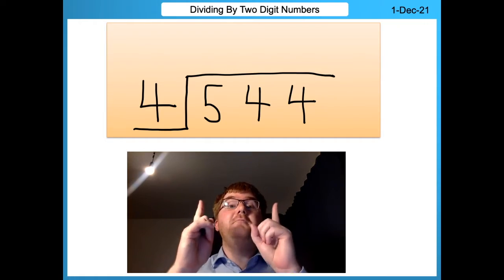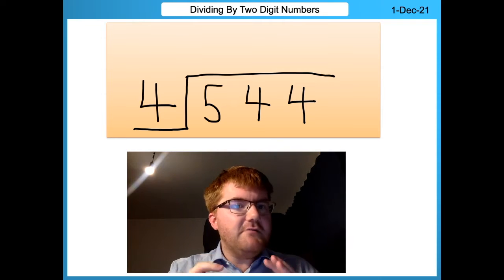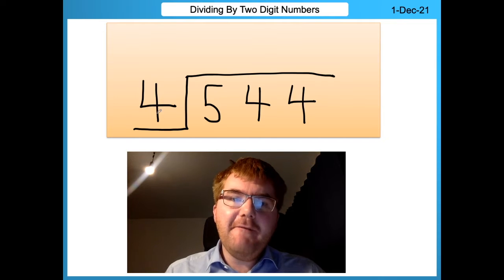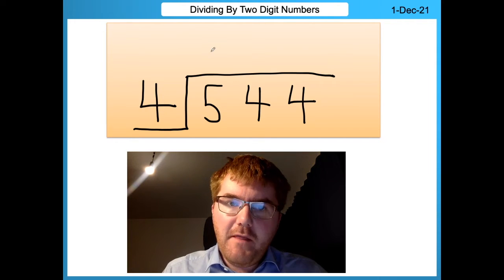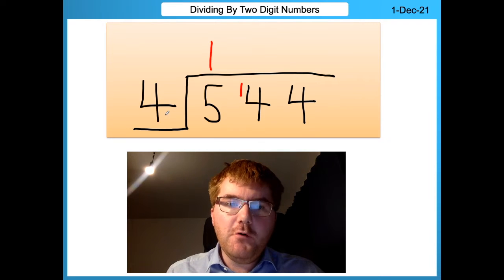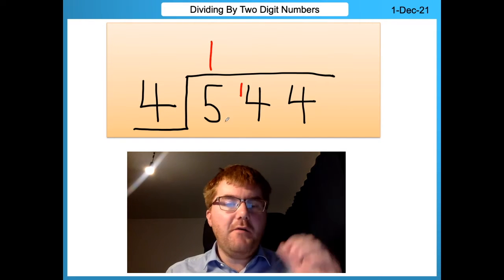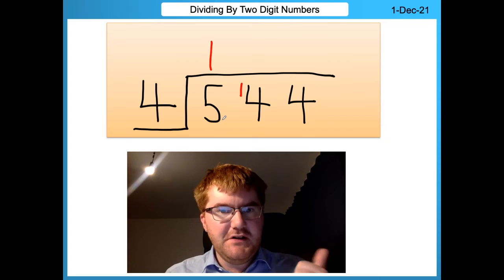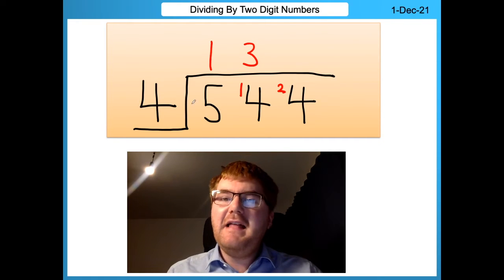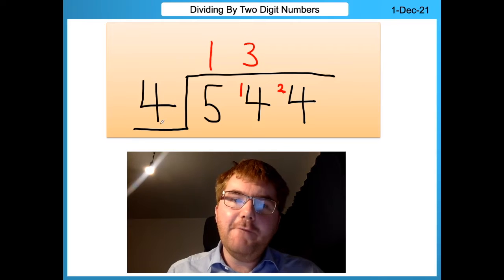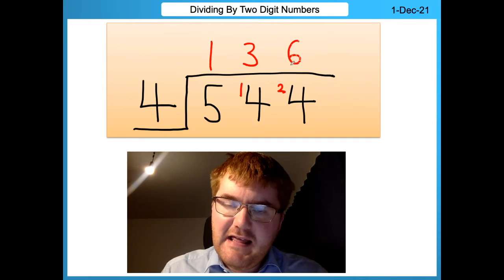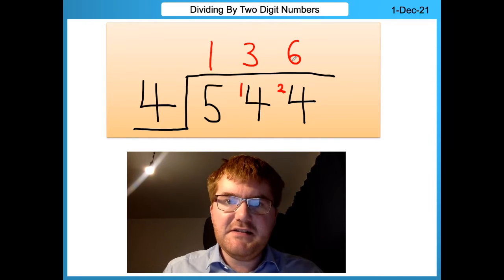So if you look above me, we're going to do a very quick 30 second recap of normal division. So if we go through this problem, how many fours go into five? Well, that's going to be one remainder one. How many fours go into 14? Well, three times four is 12. So three, then we have a remainder two. And then finally, how many fours go into 24? So you'll see that's equal to six.